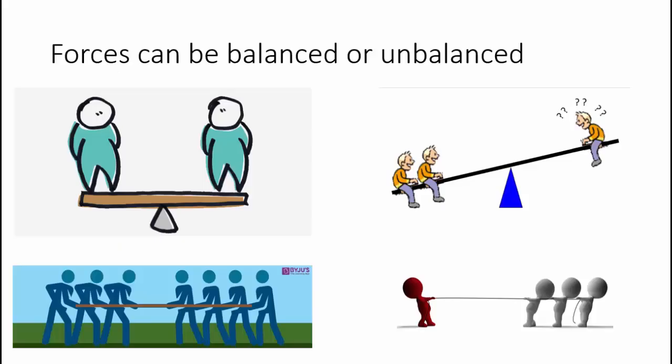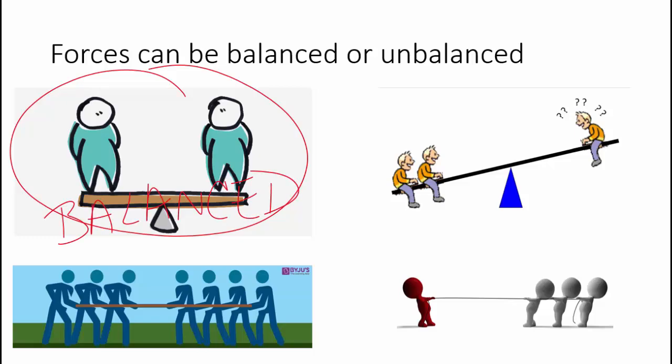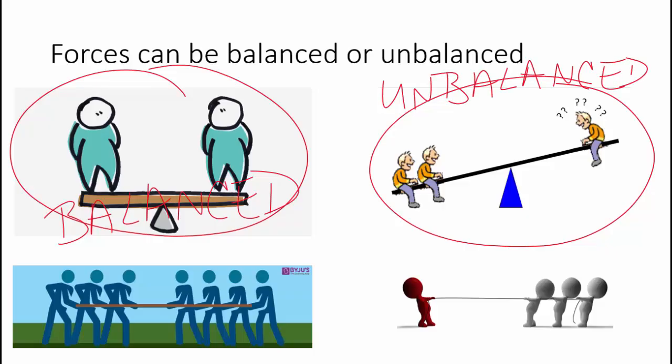Forces can either be balanced or unbalanced. So here you can see, this would be an example of a balanced force. You can probably guess that they have the same weight, their forces are equal, so they've balanced on that seesaw. Over here, the forces are not balanced, they're unbalanced. And we see that the seesaw has moved. It's come down over here, and up on this side.